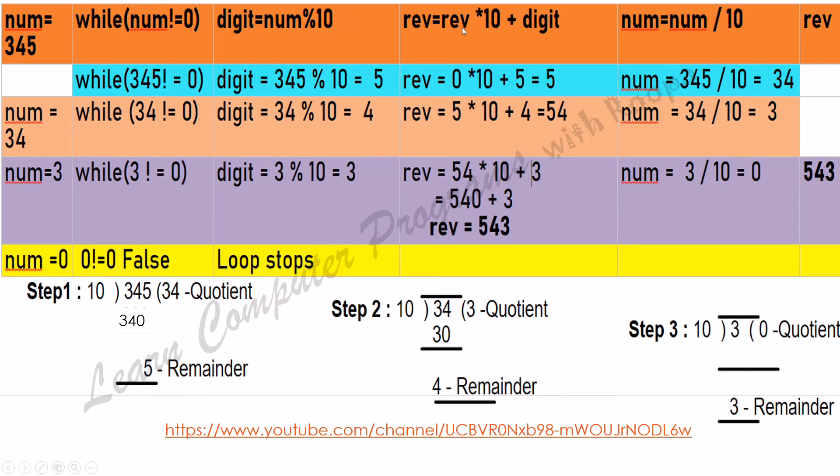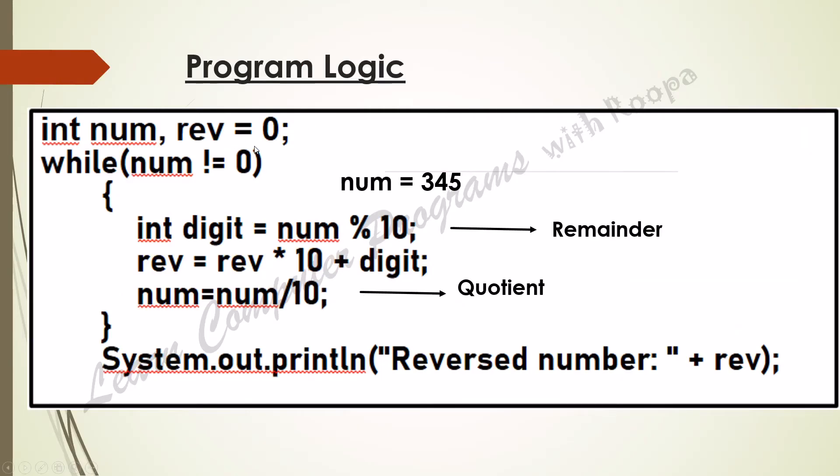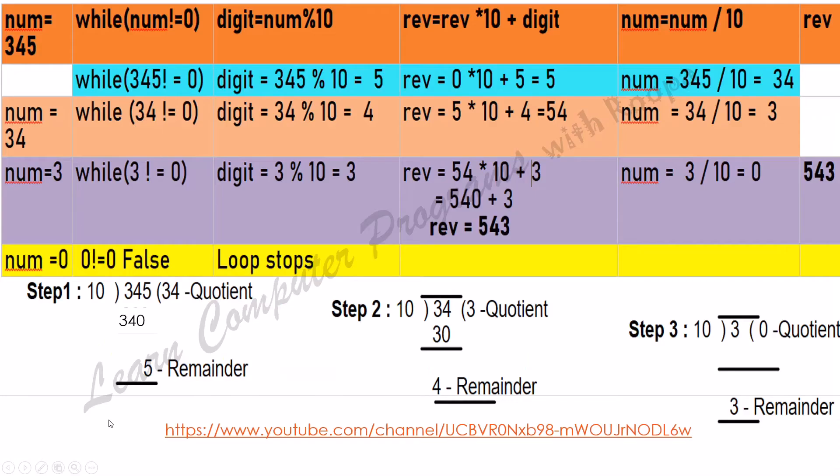You can see here rev equals 0. So we are going to multiply that by 10: 0 times 10 plus 5. Now we get the value 5. Now, once this last digit is extracted...